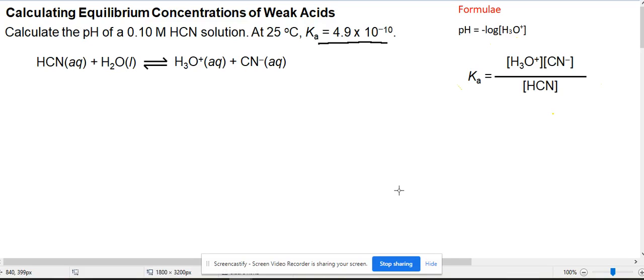Hi, welcome back. We have a problem of calculating the equilibrium concentrations of weak acids, specifically calculating the pH of a 0.1 molar HCN solution at 25 Celsius. They give us the equilibrium constant.